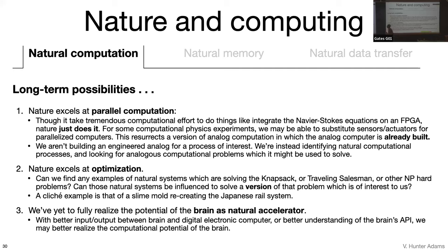Maybe for some computational physics experiments, we may be able to substitute sensors and actuators for parallelized computers. This is a version of analog computation, but what makes it different is we aren't building an analog computer—we're using an analog computer that's already been built by nature. We aren't engineering an analog for a process of interest; instead we're identifying computational processes that are just occurring in nature and trying to identify analogous problems that natural process might be used to solve.